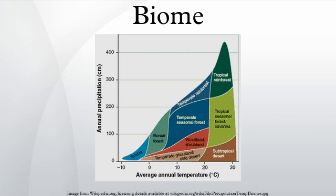Biomes are climatically and geographically defined as contiguous areas with similar climatic conditions on the earth, such as communities of plants, animals, and soil organisms, and are often referred to as ecosystems. Some parts of the earth have more or less the same kind of abiotic and biotic factors spread over a large area, creating a typical ecosystem over that area.